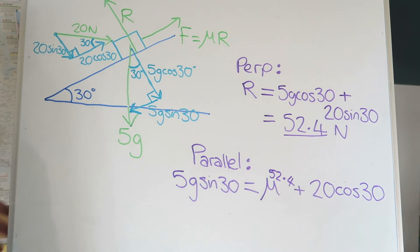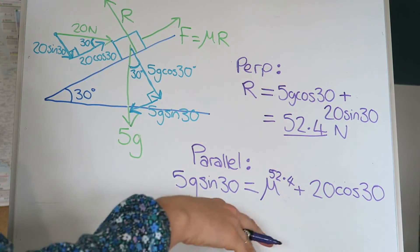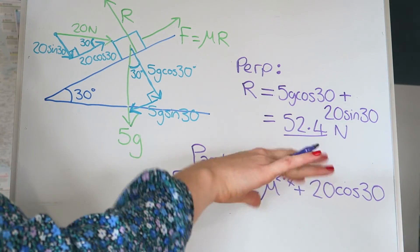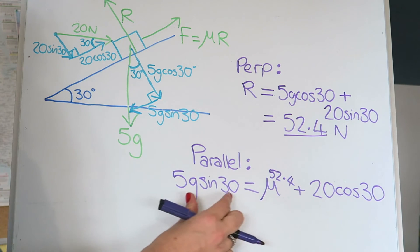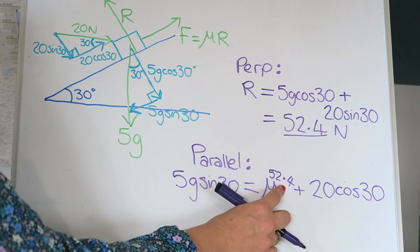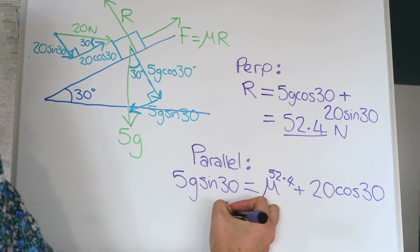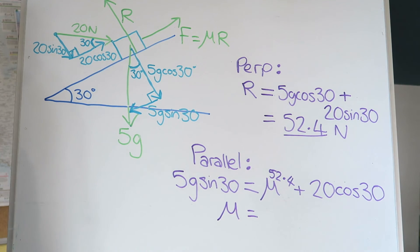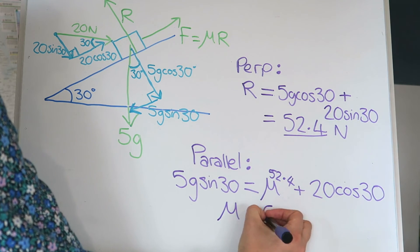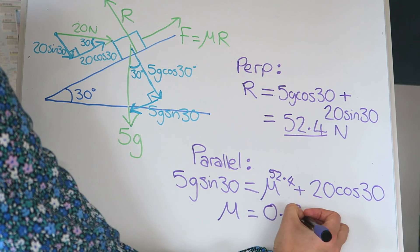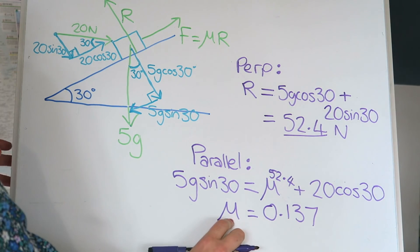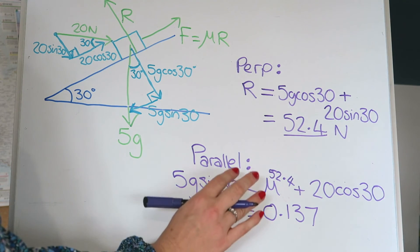And I'm not going to write it out because you can do this by now, but you can solve that equation, rearrange, take that one off that side, and then divide by 52.4, you should be able to get mu, which I make to be 0.137. And remember, that's the coefficient of friction, so you're expecting it to be a number less than one. And that is it. That's the question done. Finished.